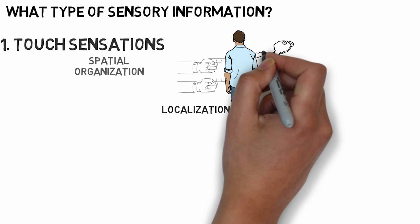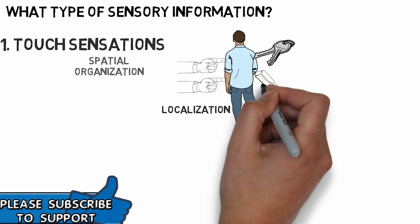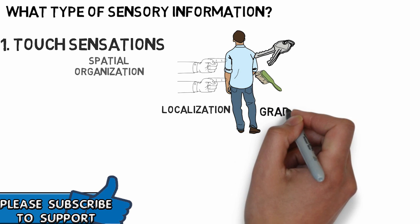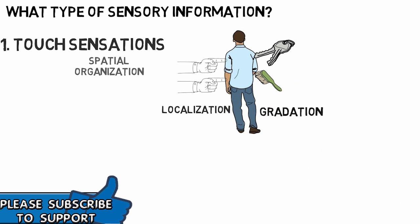The second important property is your ability to differentiate between a crude touch and a fine touch, and this is known as the gradation of the touch sensations.